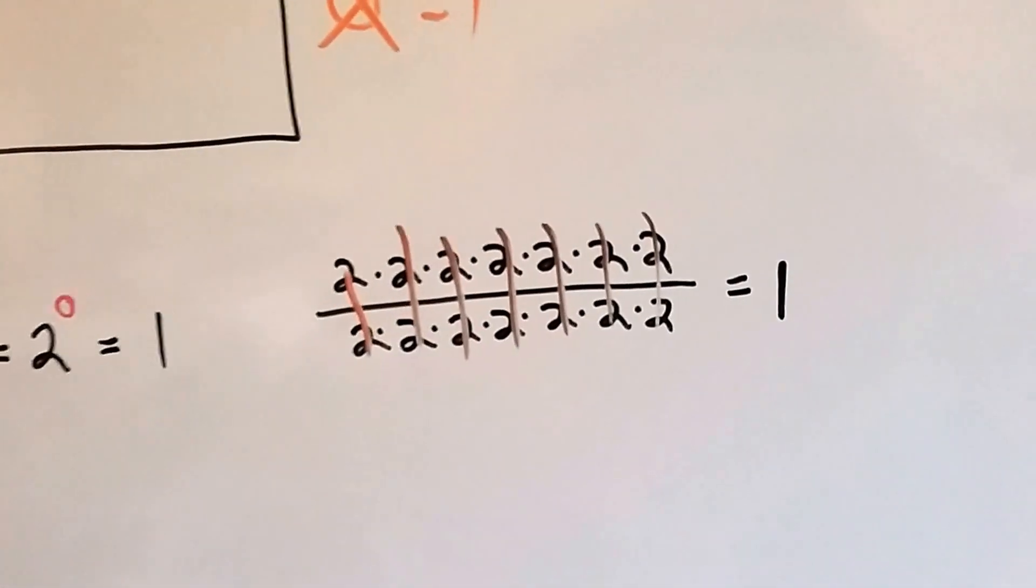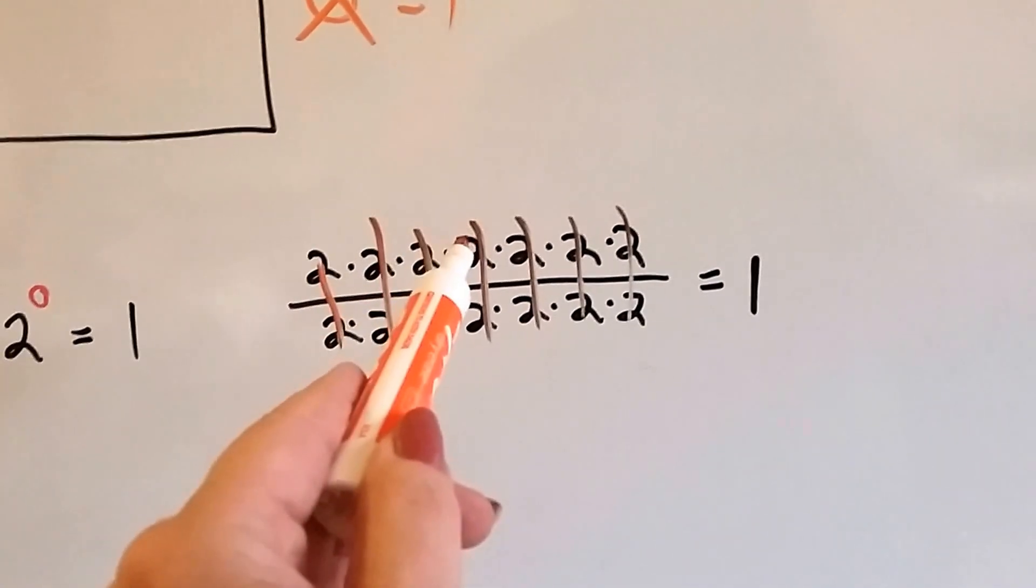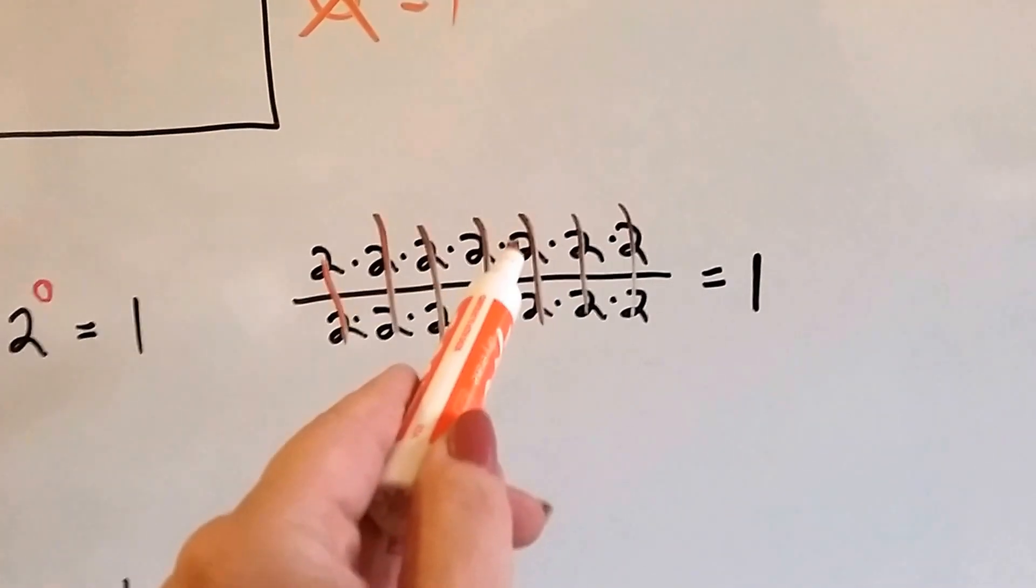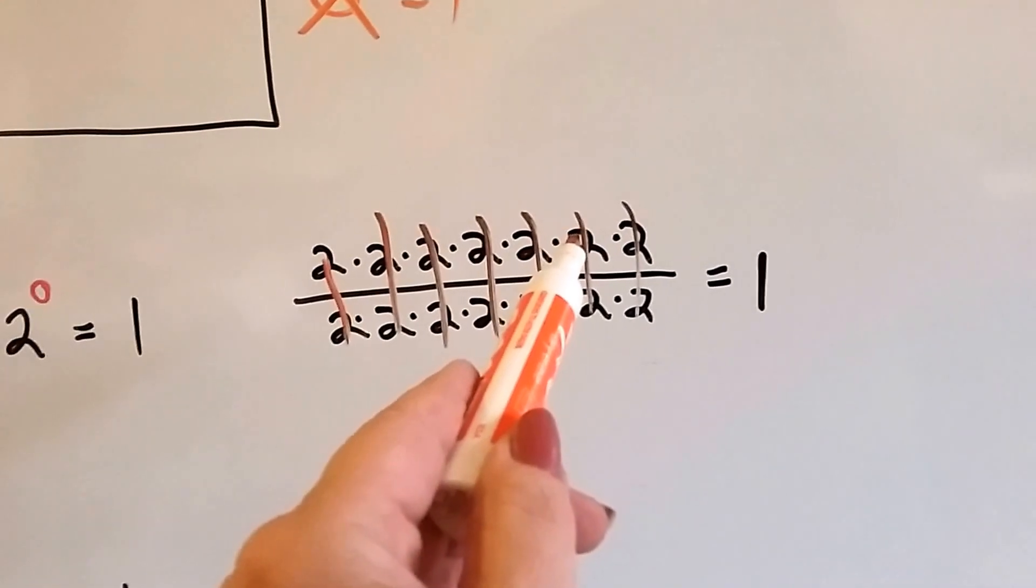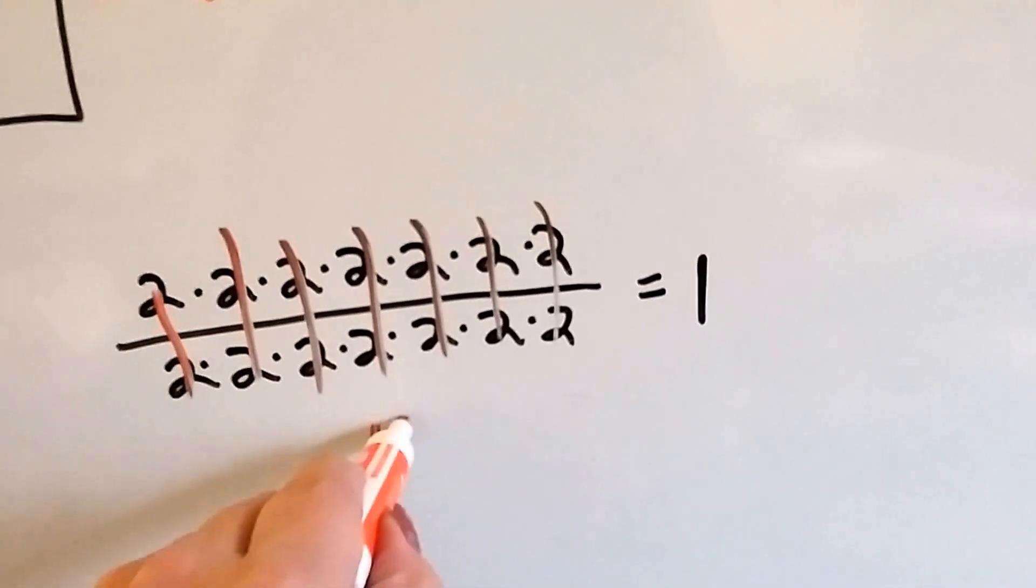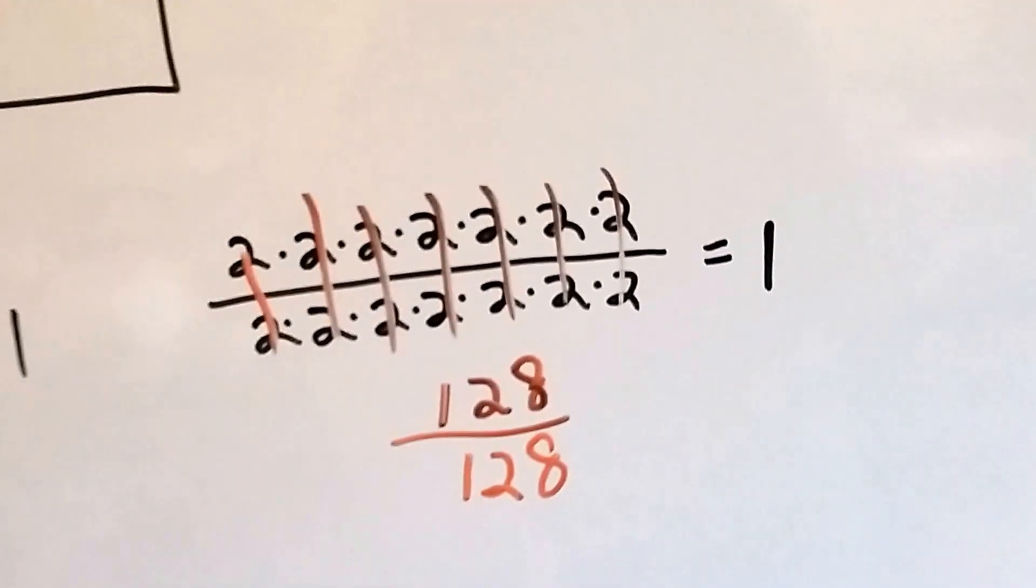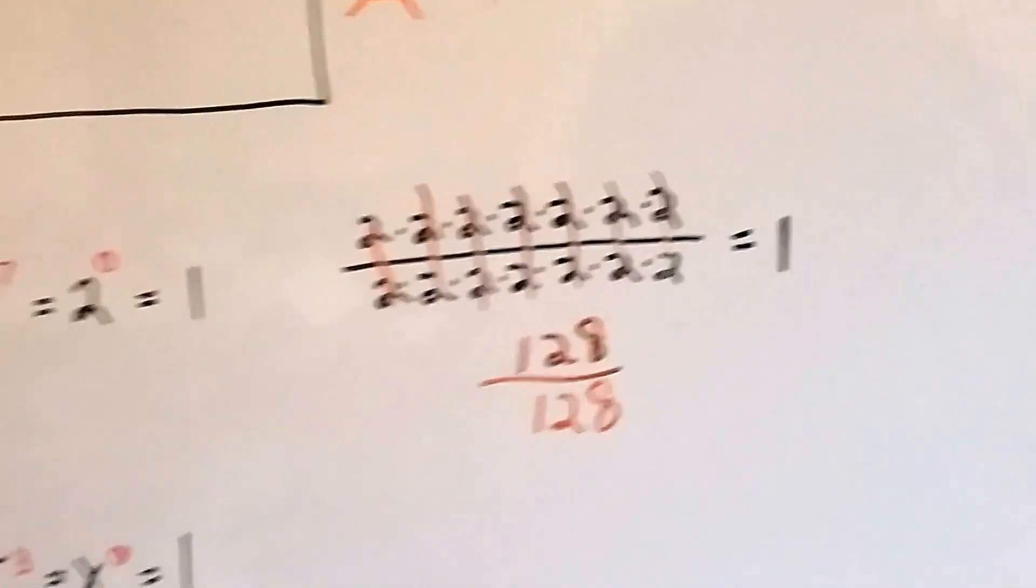If we did all this multiplication, 2 times 2 is 4, times 2 is 8, times 2 is 16, times 2 is 32, times 2 is 64, 64 times 2 is 128. So this whole thing equals 128 over 128. Same numerator and denominator, so it's going to equal 1.